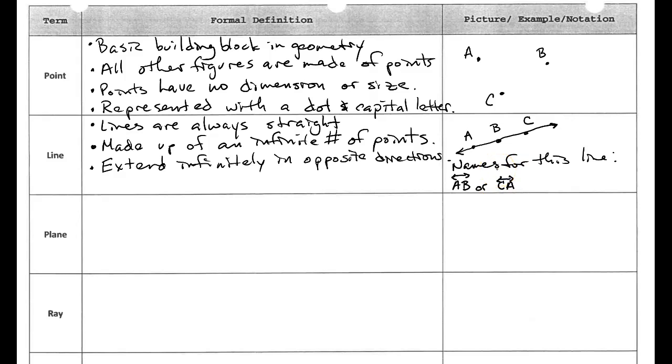When we're naming a line it really doesn't matter the order that we put the letters. When we get to other things like rays it's going to make a difference. Alright let's do one more. Or we could call it line BC. So these are three possible names. There's a couple more that we could use. But when we write any one of these three we know that we're talking about this line that I drew in the box.